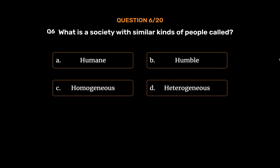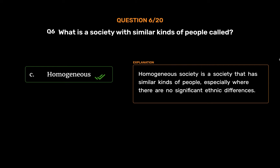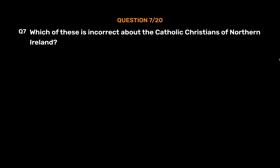The correct answer is Option C: Homogeneous. A homogeneous society is a society that has similar kinds of people, especially where there are no significant ethnic differences.